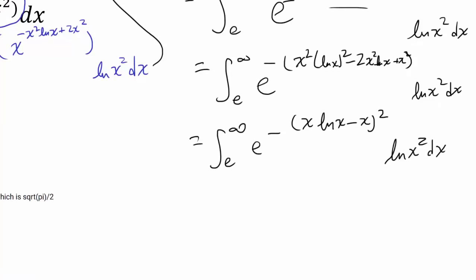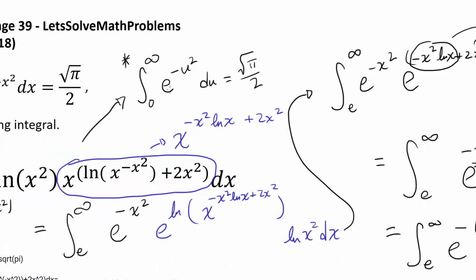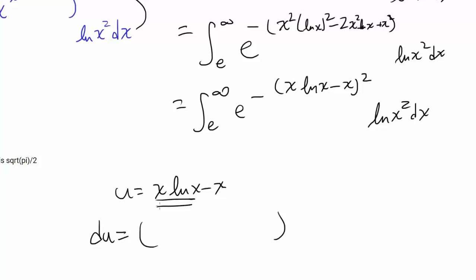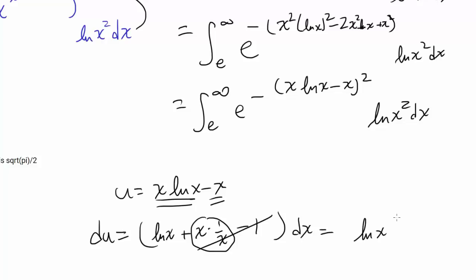The integrand is now e to the negative of x times natural log of x minus x, all squared. This suggests our u-substitution: let u equal x times natural log of x minus x. Differentiating by the product rule gives natural log of x plus x times 1 over x, minus 1, which simplifies to natural log of x. So du equals natural log of x dx — exactly what we have. We can factor the 2 out front, giving 2 times the integral of e to the negative u squared du.